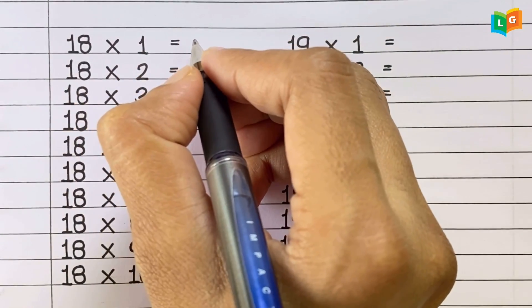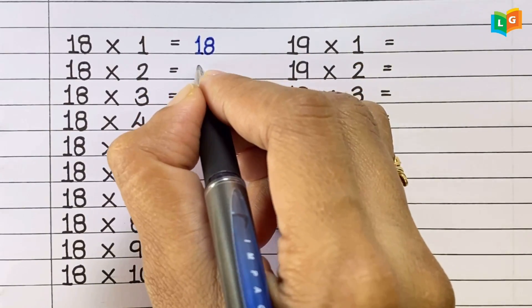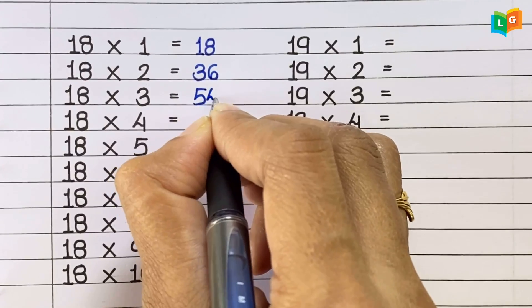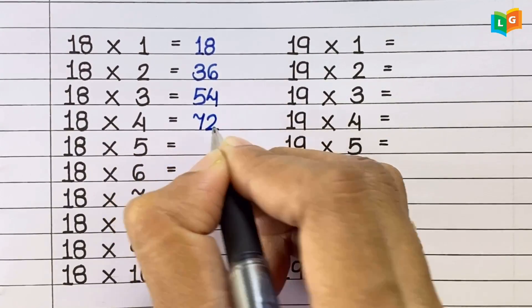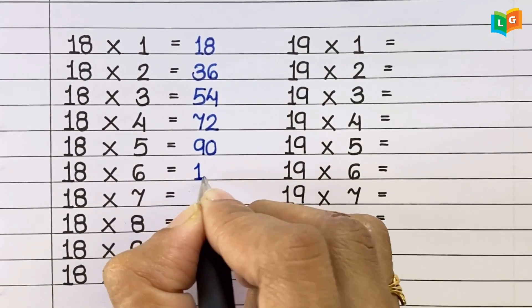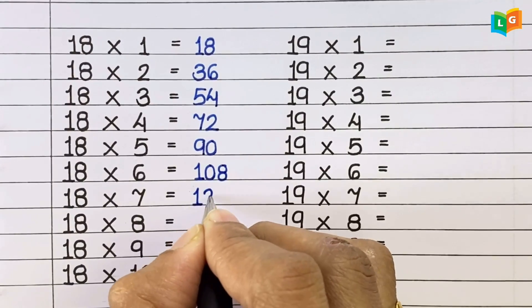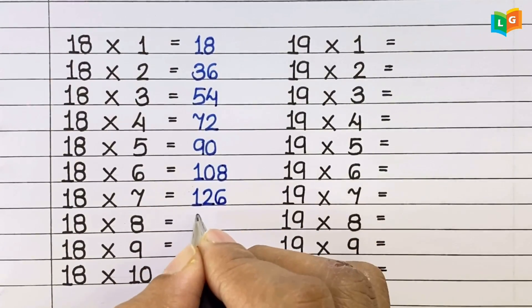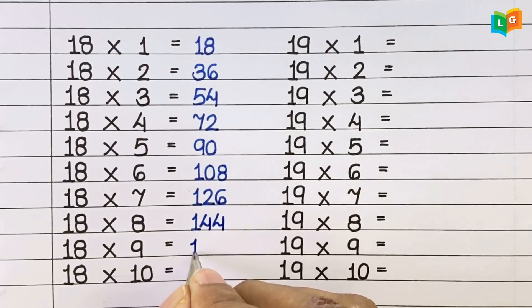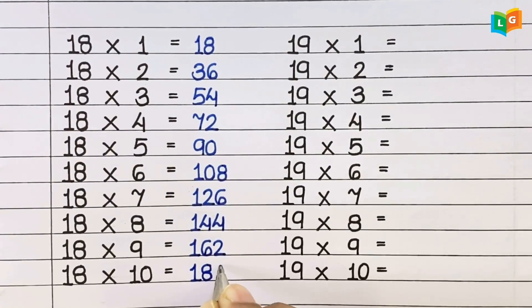Now let's see table of 18. 18 1s are 18, 18 2s are 36, 18 3s are 54, 18 4s are 72, 18 5s are 90, 18 6s are 108, 18 7s are 126, 18 8s are 144, 18 9s are 162, 18 10s are 180.